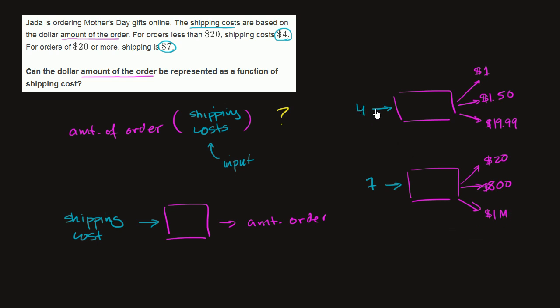So because for a valid shipping cost, for each of these valid shipping costs, I can get many, many potential outputs. If someone tells you the shipping cost, you don't necessarily know what the order size was. This is not a function. You cannot represent the amount of order as a function of the shipping cost. So no.